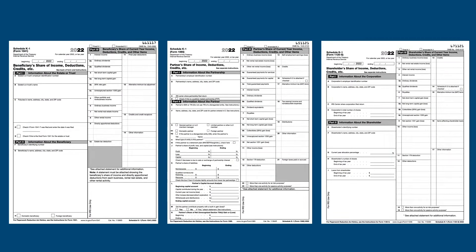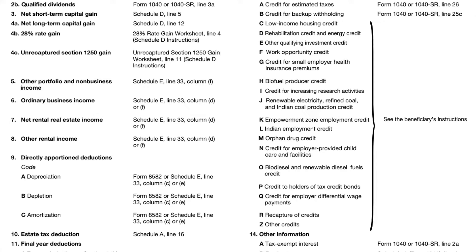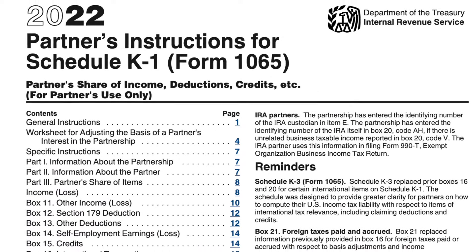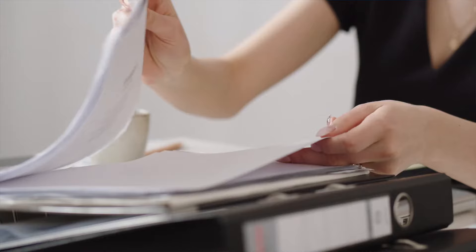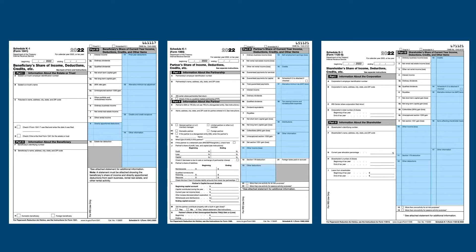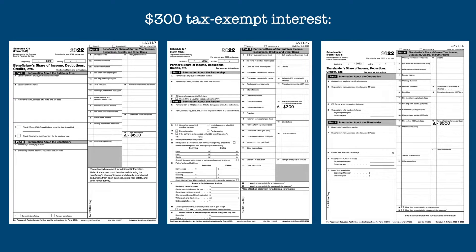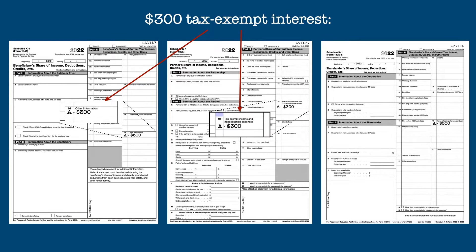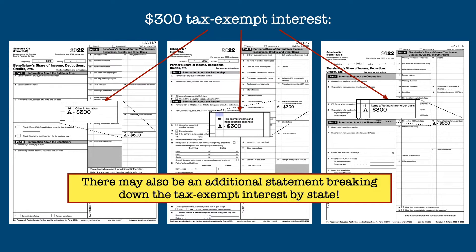The items that can be on a K-1 can go well beyond what's called out on the Schedule. All the entries highlighted here can contain multiple items, each with its own code. Most of these codes are defined on either page 2 of the K-1 or in the Schedule's instructions. It's not at all unusual for a K-1 to come with multiple pages of explanations and details of the various entries. The same items are often entered in different places on the different K-1s. As an example, tax-exempt interest is reported with a code of A in Box 14 on the Estate and Trust K-1, Box 18 on the Partnership K-1, and Box 16 on the S-Corporation K-1. Plus, there may also be an additional statement attached to the K-1, breaking down the tax-exempt interest by state.